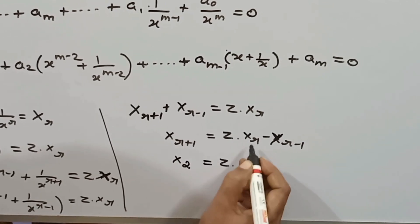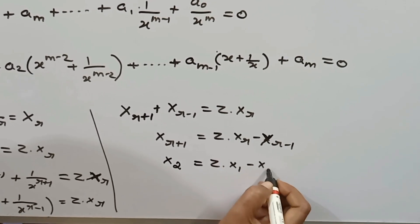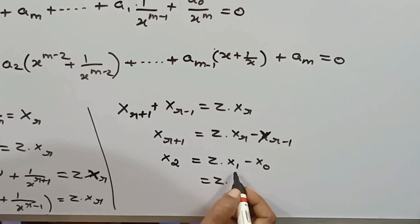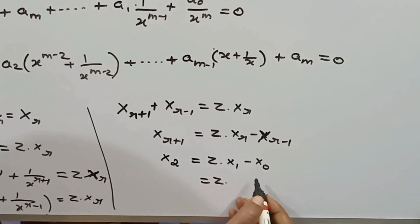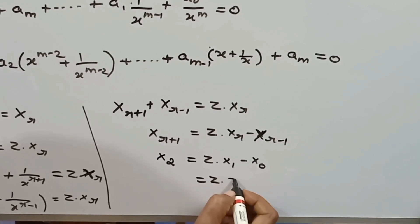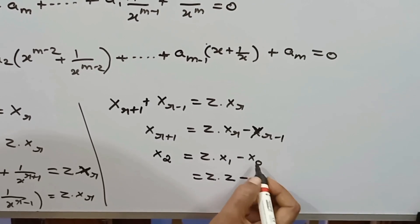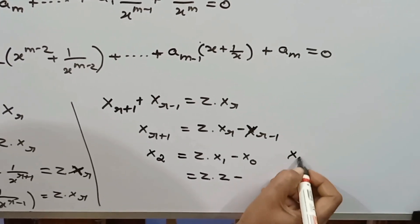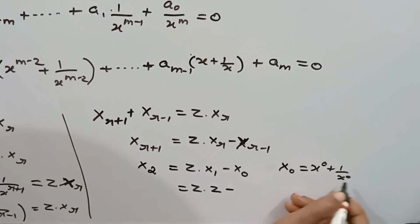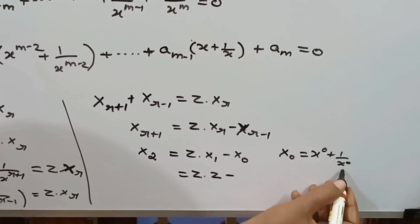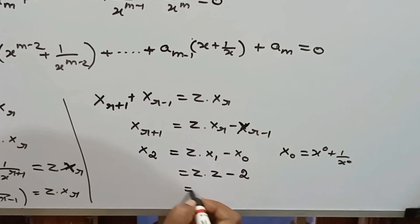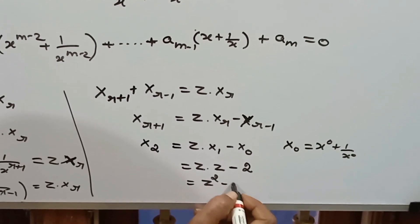Using the substitution, we denote x^r + 1/x^r as X_r. So X_(r+1) = z · X_r − X_(r−1). For r = 0: x^0 + 1/x^0 = 1 + 1 = 2, so X_0 = 2. For r = 1: x + 1/x = z, so X_1 = z. Using this recurrence, X_2 = z · X_1 − X_0 = z·z − 2 = z² − 2.